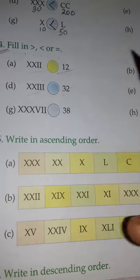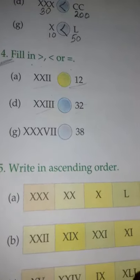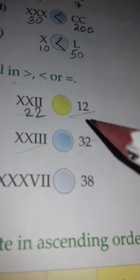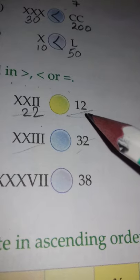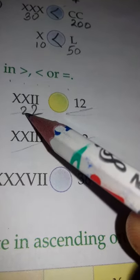Part (a): XXII is given. XX means 20, II means 2, so XXII means 22. On the other side it's given in Hindu-Arabic as 12. So 22 on this side, 12 on this side, so this side is greater.